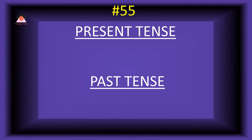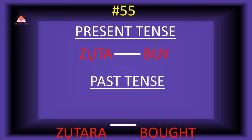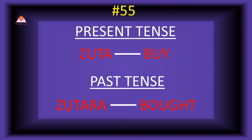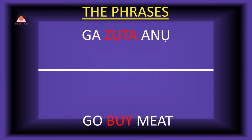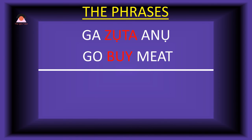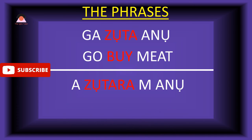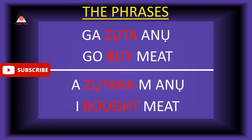Word number fifty-five: 'zota,' meaning 'buy.' The past tense of zota is 'zotara,' meaning 'bought.' Present tense phrase: 'gaa zota ano' — go buy meat. Past tense: 'a-zotara m'ano' — I bought meat.